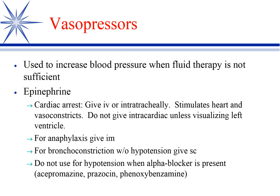Beta-1 is the heart — set that aside. Looking just at blood vessels: alpha-1s vasoconstrict, beta-2s vasodilate. In the body as a whole there are far more vessels with alpha receptors than beta-2 receptors, so the net effect is a vasopressor effect — raising blood pressure. But if you block the alpha receptor with acepromazine or similar drugs, the beta-2 vasodilation is unopposed, and instead of raising blood pressure, epinephrine will actually lower it.